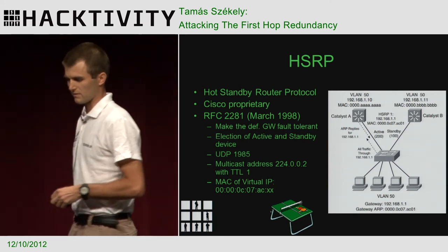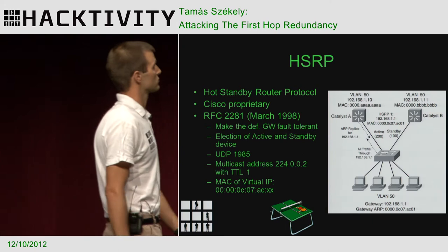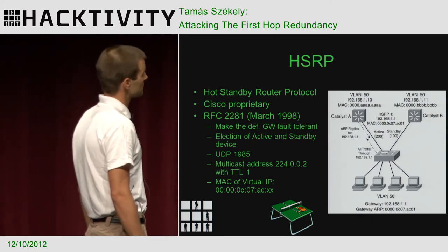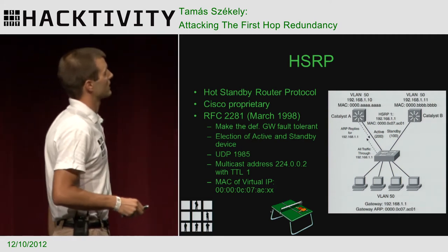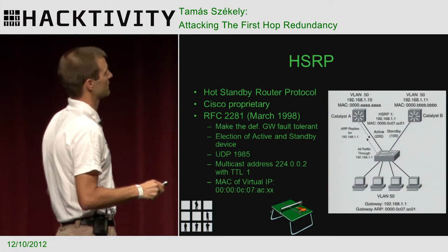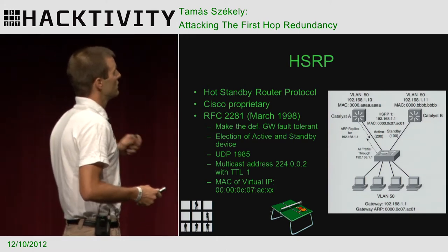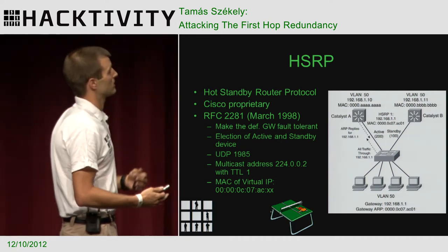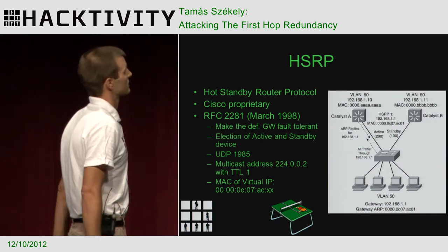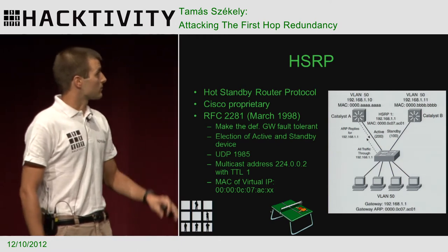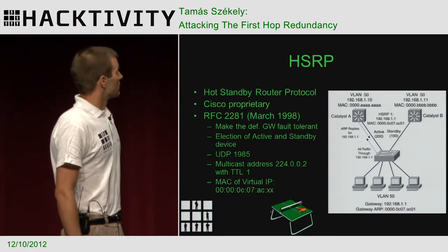HSRP was determined by Cisco in 1998 — it is Cisco proprietary, from March 1998 — to make the default gateway fault-tolerant so that there would be layer 3 redundancy. What they did: they took two or more devices, put them into a group with a virtual IP address and a standardized MAC address. This virtual IP address is given to the host as a default gateway, and these devices in the background decide which one is going to answer the IP call. It is always the higher priority device that responds to the virtual IP address. If two devices have identical priorities, the one with the higher IP address will take it over.